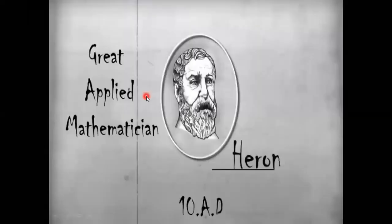The same question fascinated another great applied mathematician named Heron back in 10 AD. He came up with another formula, which in his honor is known as Heron's Formula to find the area of a triangle.